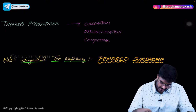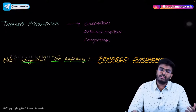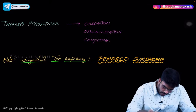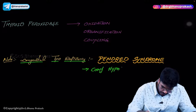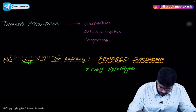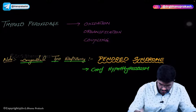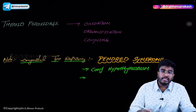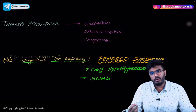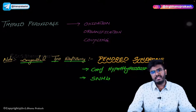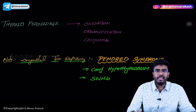What conditions will this person suffer from? Logically, whenever there is no thyroid peroxidase, T3 and T4 production cannot happen. So the patient will suffer with congenital hypothyroidism as well as sensorineural hearing loss. In Pendred syndrome, the clinical features are congenital hypothyroidism and sensorineural hearing loss.